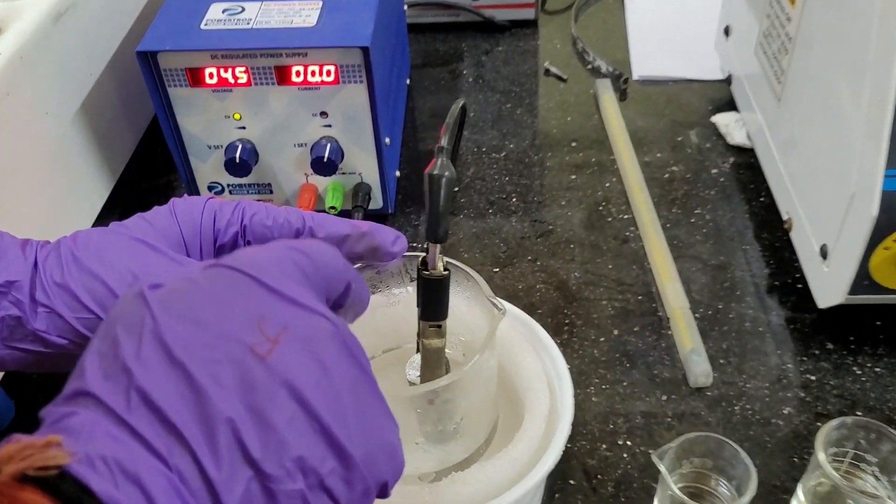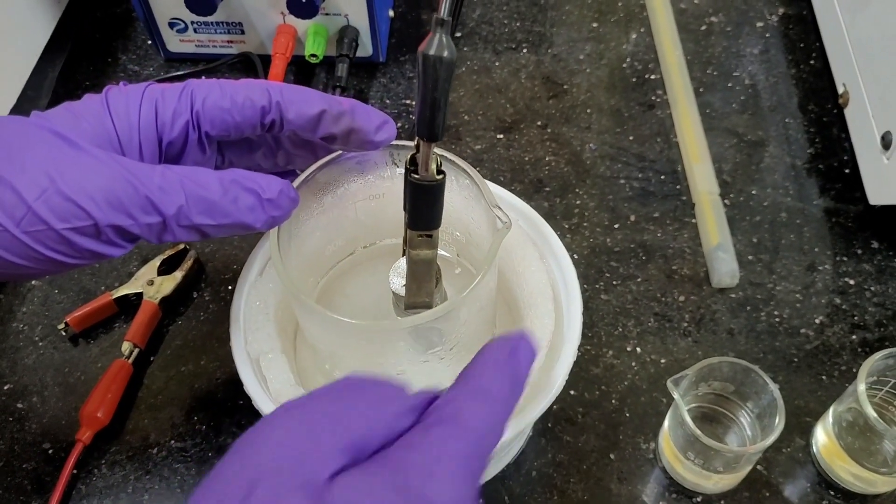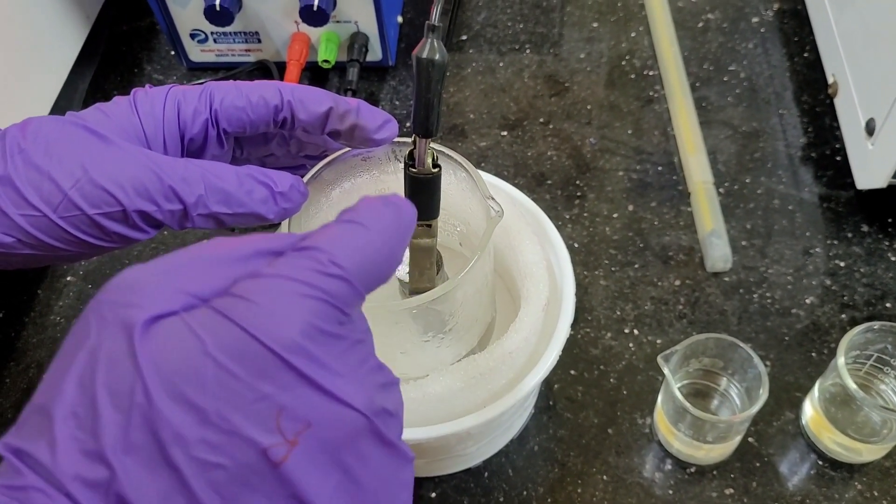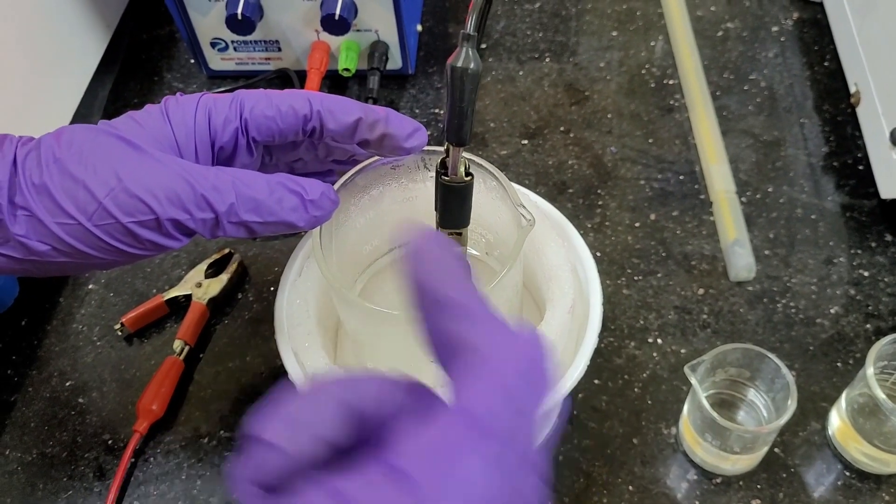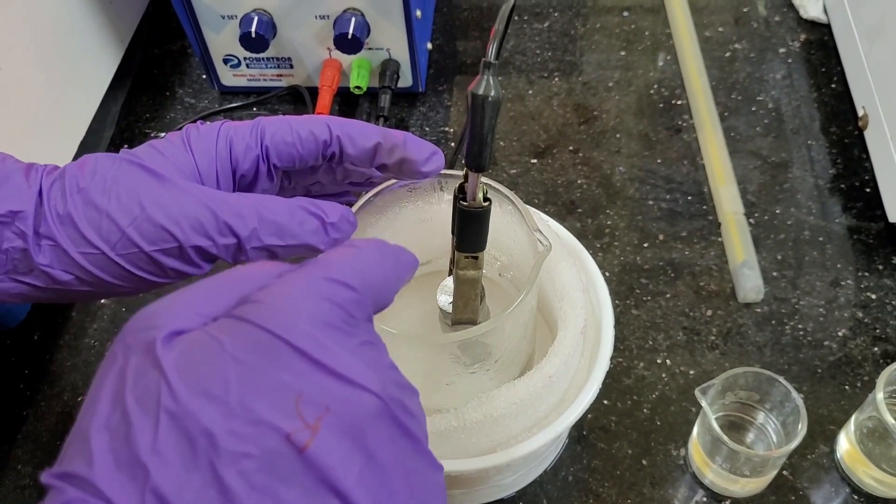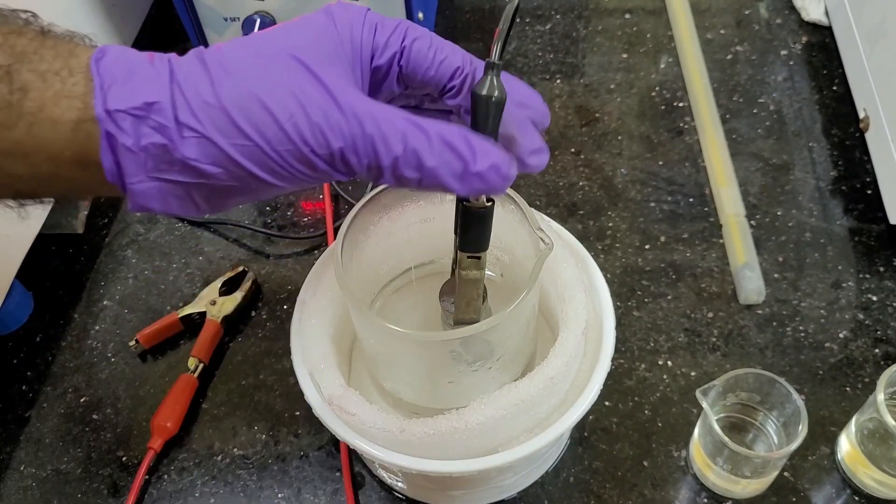Here, inside this beaker, this is the electrolyte. And outside this, there is a combination of methanol and liquid nitrogen to control, to build, to maintain the temperature inside this beaker in which electrolyte is there.